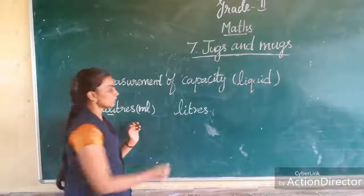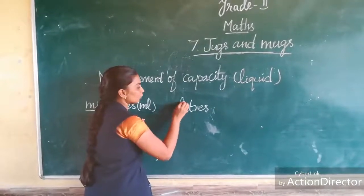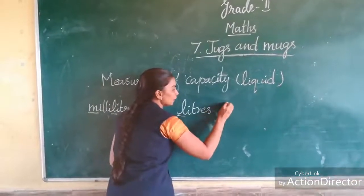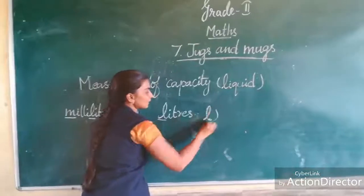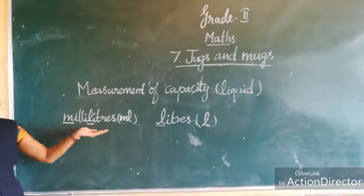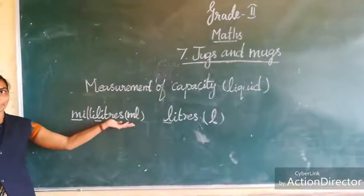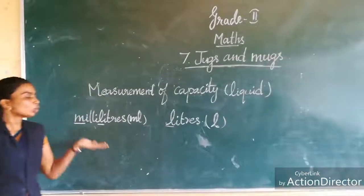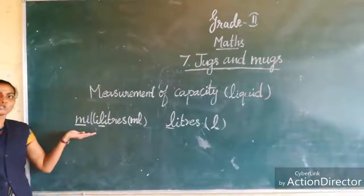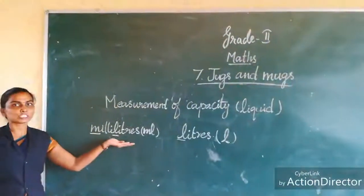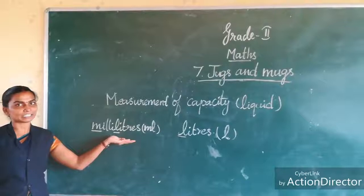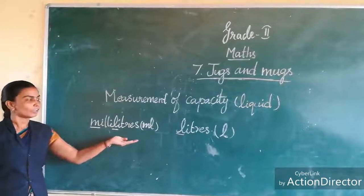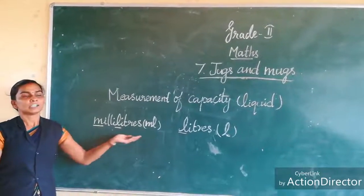Next, liters are written as capital L. We denote liters as L. So milliliters means ml and liter means L. To measure a small quantity, we use milliliters.